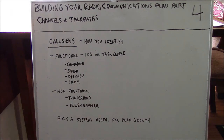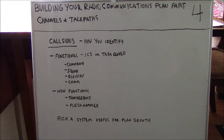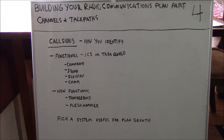Call signs are basically how you identify. We're talking about call signs for the sake of your communications plan, not your amateur radio call sign. You can have a functional call sign — ICS or task-based — such as command, squad, division, or com. Or you can have a non-functional call sign like Thunderbird or Flesh Hammer, which works in a smaller group but requires a corresponding roster as your communications plan grows. Pick a system useful for plan growth.